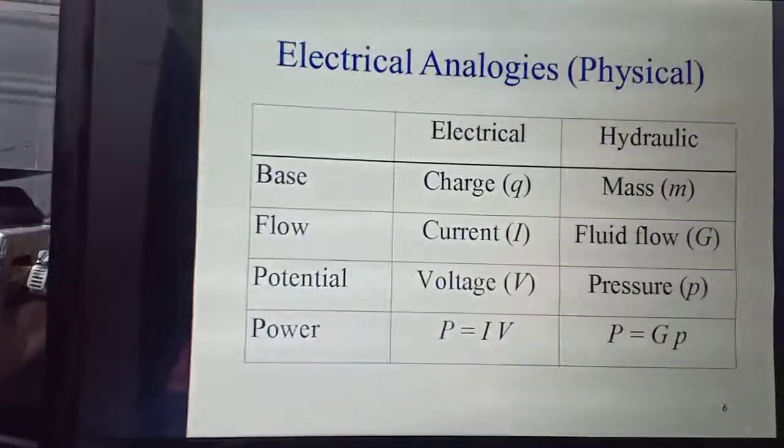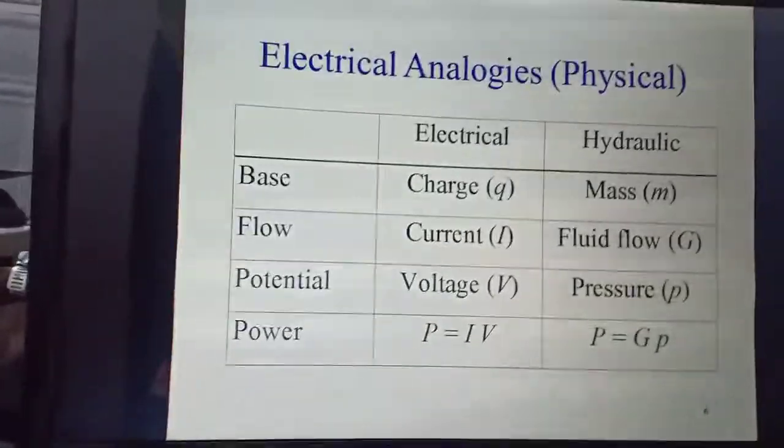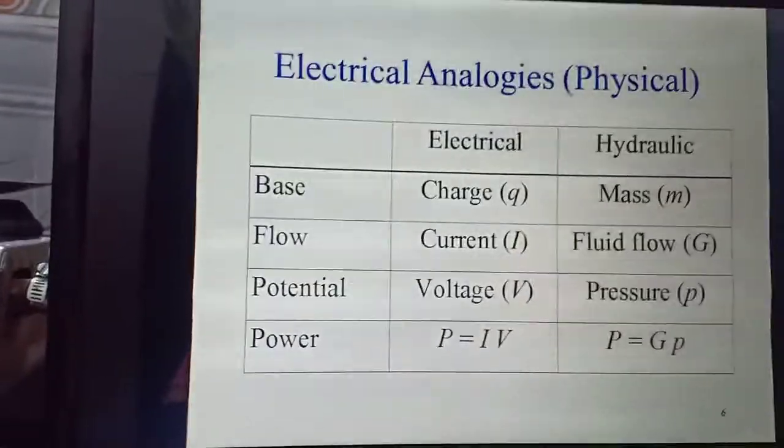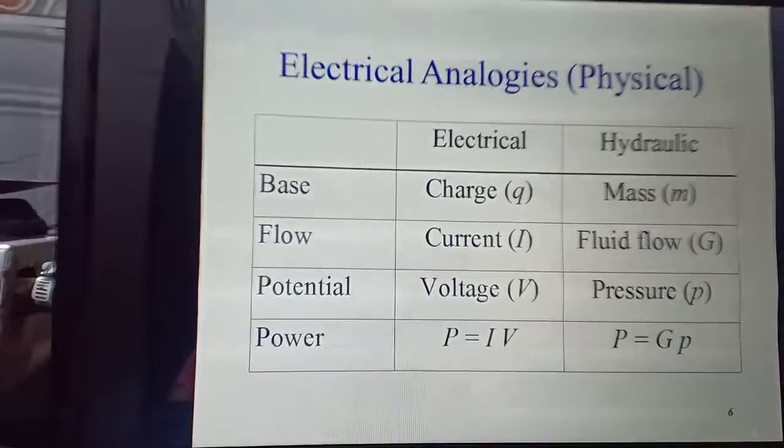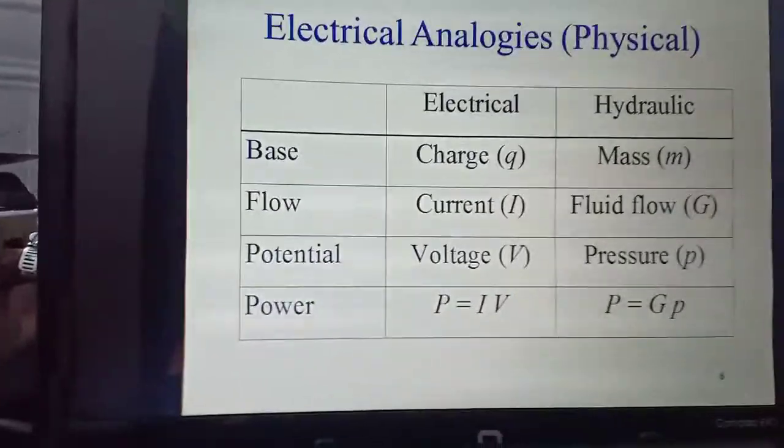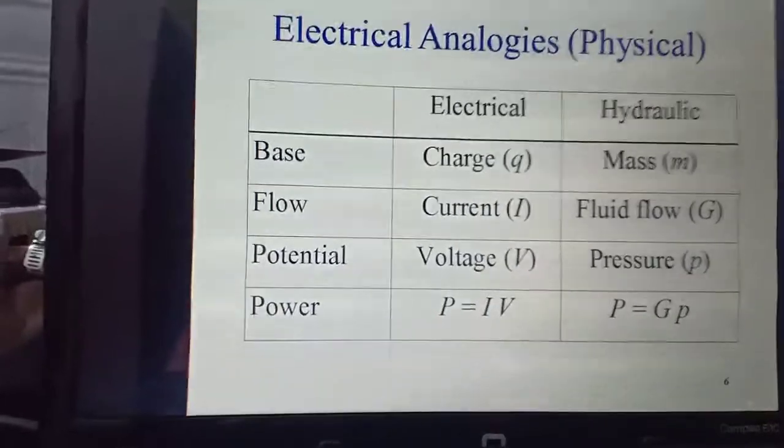This is the basic electrical analogy shown in the table, compared with hydraulic and mechanical things. In electrical, the base is charge. Flow is current. Potential is given by voltage. And power is given by current into voltage, I into V.